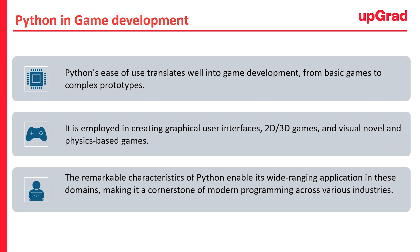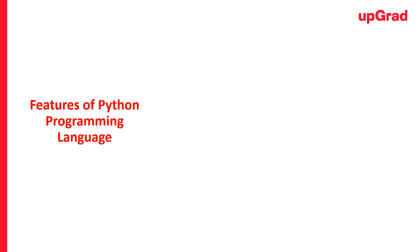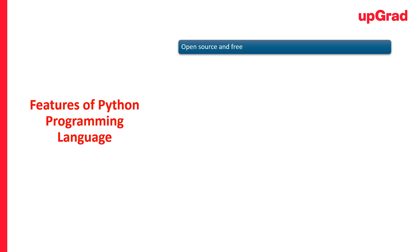So Python, known for its remarkable features, is a programming language sought after for various applications. At number one, we have open source and free. Python is an open-source language freely accessible from its official website. The vibrant Python community continuously improves the language, reducing development costs.